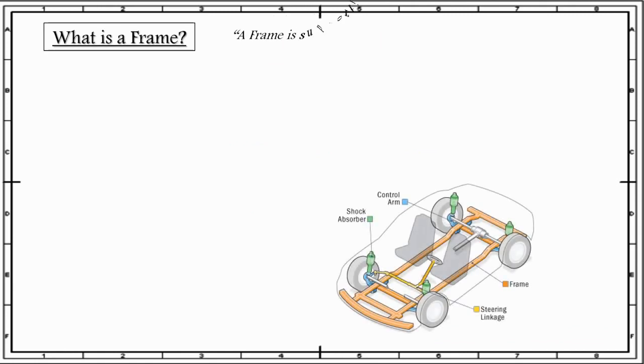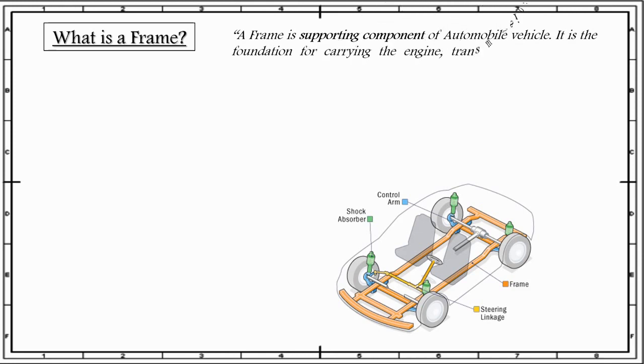First thing first, what is a frame? A frame is a supporting component of an automobile vehicle. It is the foundation for carrying the engine, transmission system, and steering by means of springs, axles, rubber pads, etc.